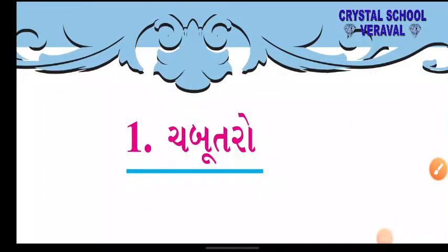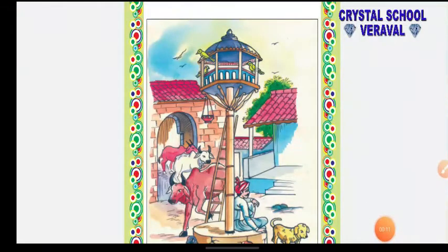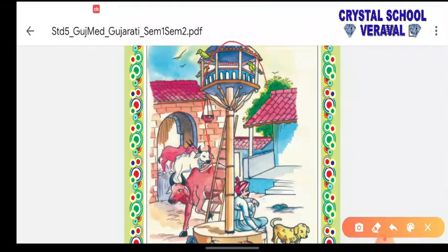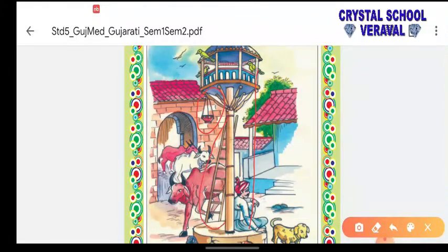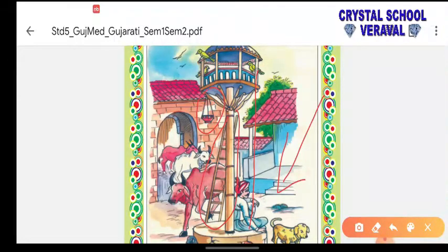નમાસ્તે, બાળ દોસ્તો! આજે હું ધોરણ સાત ગુજરાતી એકમ, પ્રકરણ પેહલું - ચબૂત્રો - ભણાવી રહી છું. ચબૂત્રો ઊંચો અને ખૂબ વ્યવસ્થિત હોય છે, જેના કારણે પક્ષીઓ નિર્ભયી રીતે ચણ ચણી શકે છે. પ્રાણીઓ - પક્ષીઓનો ડર ના રહે, એ રીતે પક્ષીઓ ખૂબ જ શાંતિ થી ચબૂત્રા ઉપર બેઠે છે.